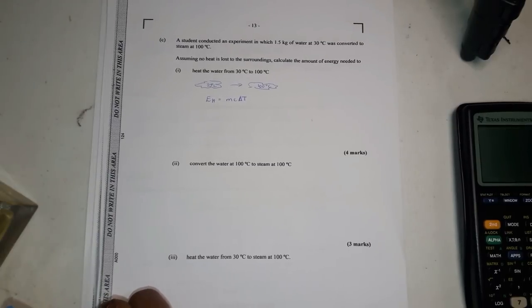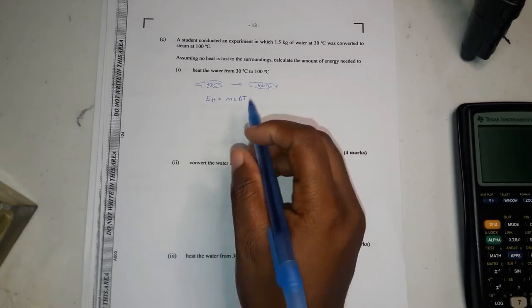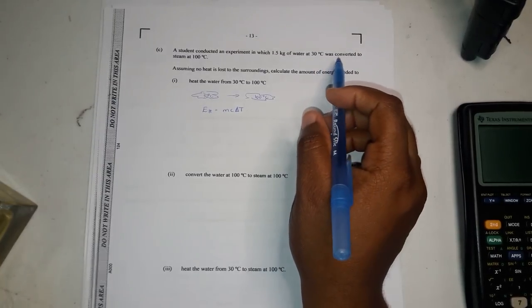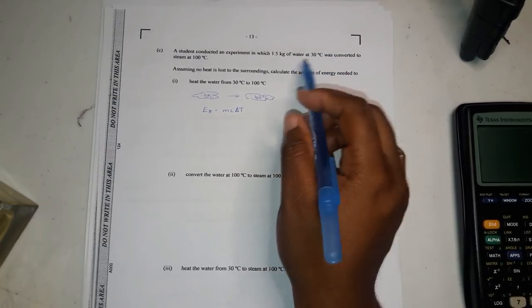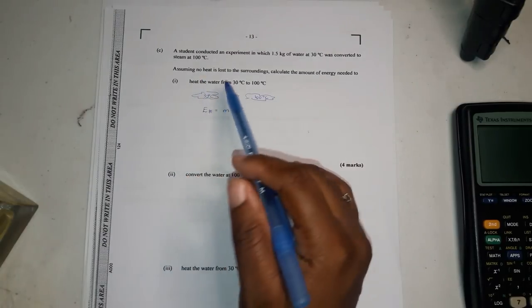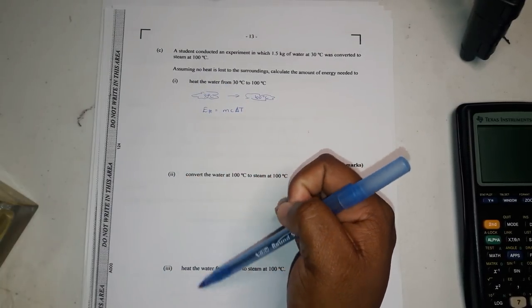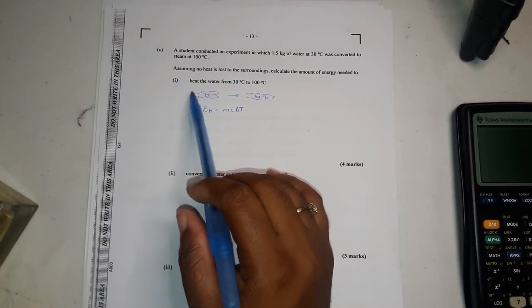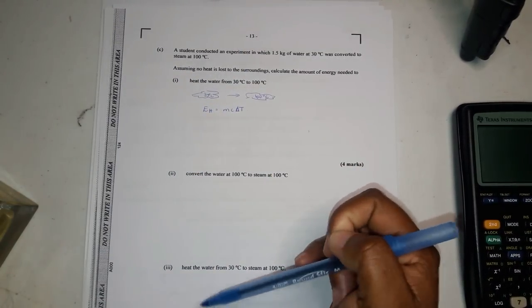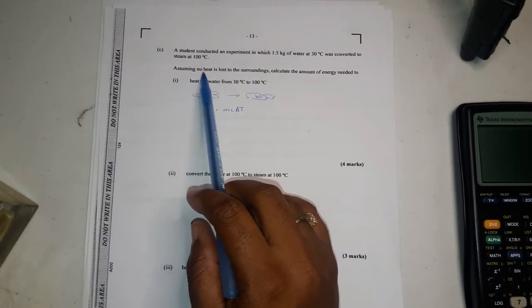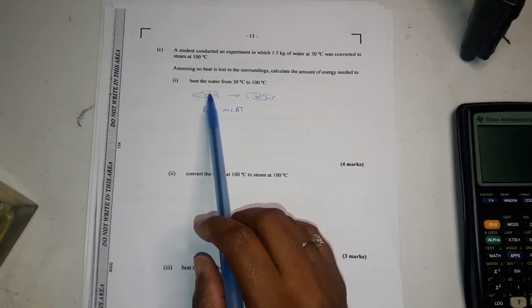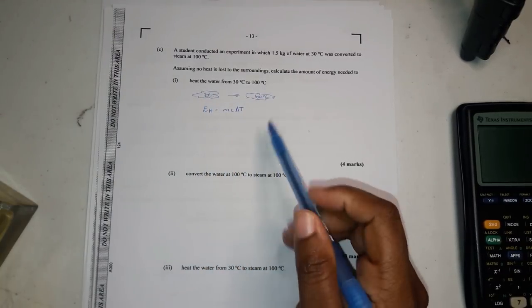Then you have here a student conducted an experiment in which 1.5 kilograms of water at 30 degrees Celsius was converted to steam at 100. And the question was really step by step. It helped you out. It didn't just ask what was the total heat loss. They broke it down into stages for you. So assuming no heat is lost to the surroundings, calculate the amount of energy needed to heat the water from 30 to 100.